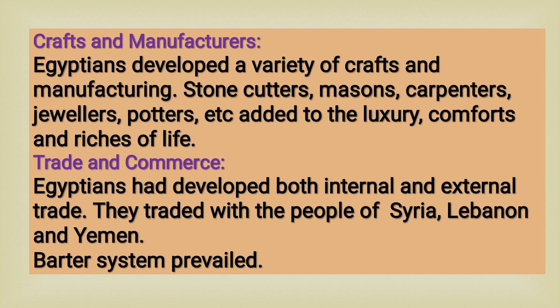Crafts and manufacturing: Egyptians developed a variety of crafts. Stone cutters, masons, carpenters, jewelers, potters, etc. added to the luxury, comforts and richness of life. Trade and commerce: Egyptians had developed both internal and external trade. They maintained trade relations with the Mediterranean world including Syria, Lebanon and Oman. Barter system or exchange of commodities existed during Egyptian civilization.